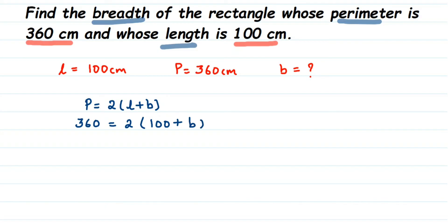If you see this is 2 into 100 plus b. 2 is in the multiplication. What I am going to do? I am going to first transpose this 2 to the other side of the equation. 2 when goes to other side, it goes to division. This will become 360 divided by 2 is equal to 100 plus b.